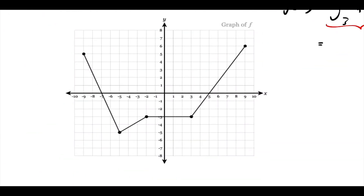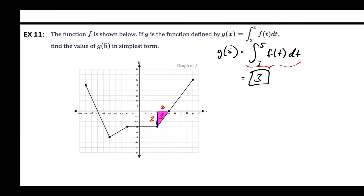The area of that triangle: base 2 times height 3 is 6, half of that is 3. But since the region is below the x-axis, it's negative, so g(5) equals negative 3.